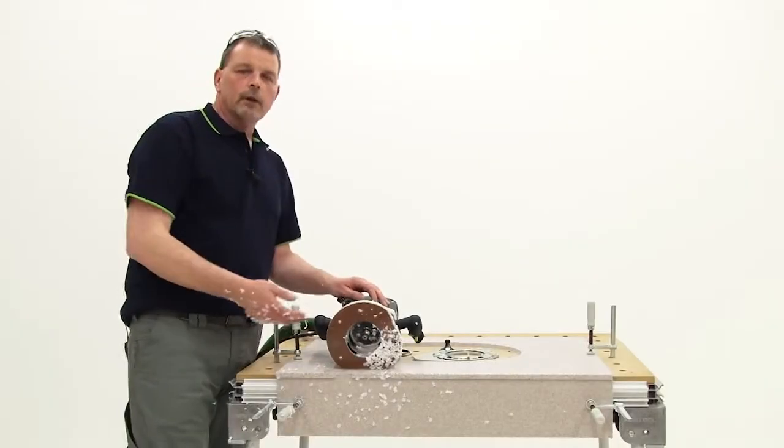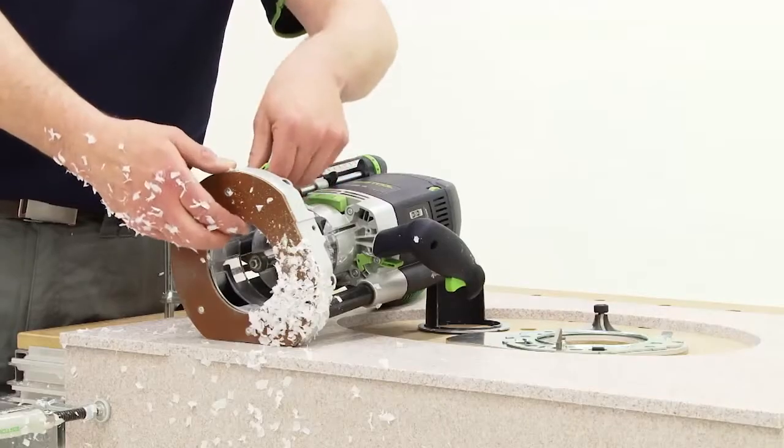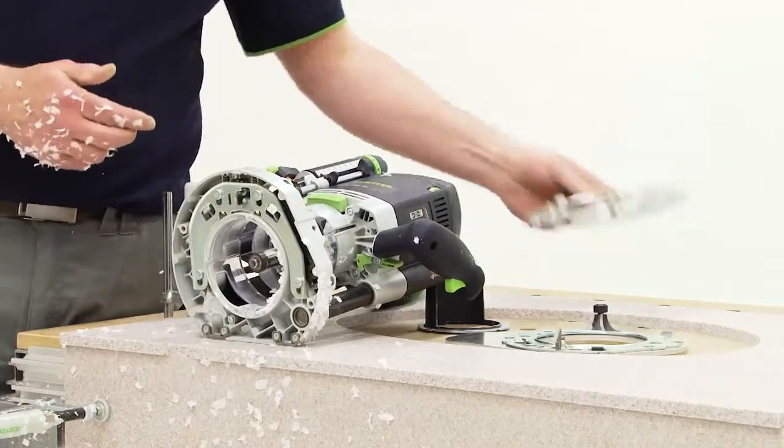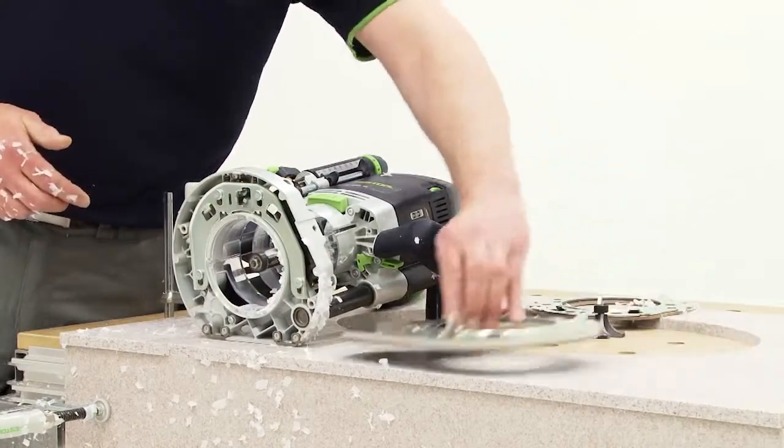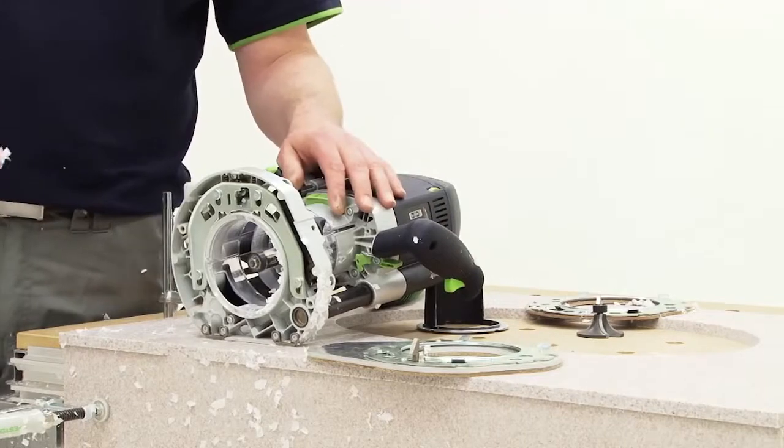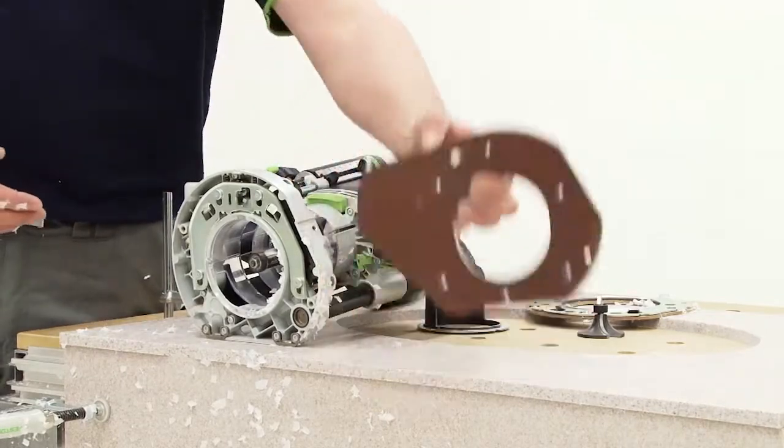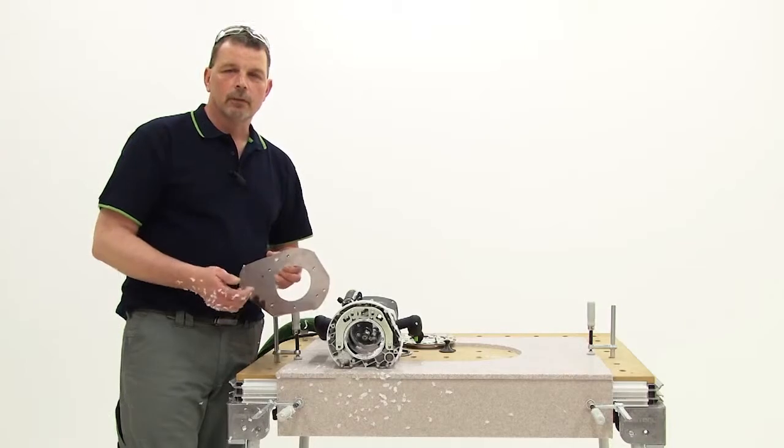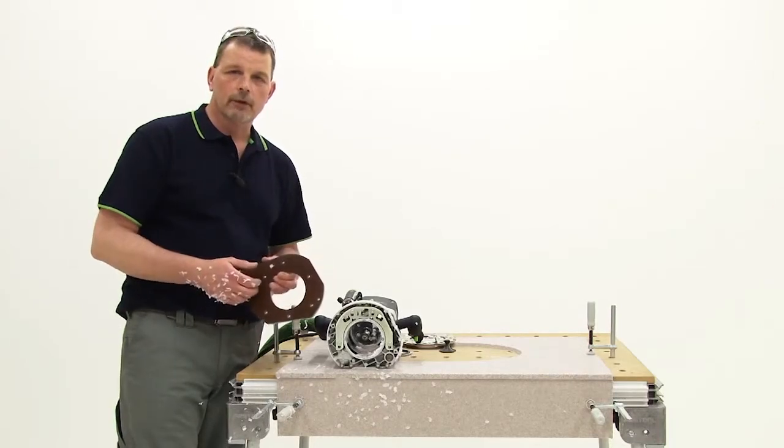The OERF 2200 means that we can adapt the machine to what we need. We can take our base off and we can also fit a base which is wider which gives us a lot more base support. By increasing the area of support we're stable and I can concentrate on the operation that I'm doing.